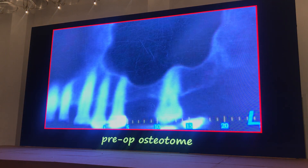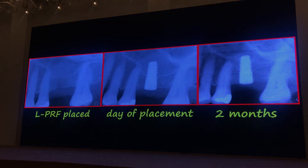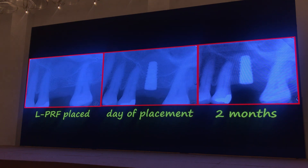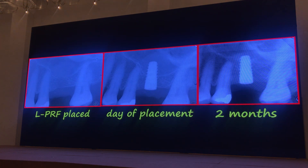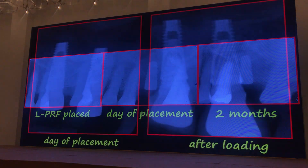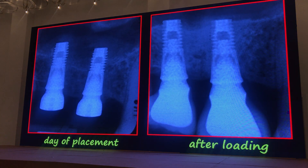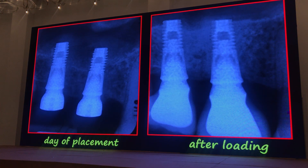So here's a case. You can see the graft material when the implant is placed. And then when you look, you see how it shrinks down, comes down. And then when you're all done, it sticks up a little bit. The implant acts as the space maintainer.